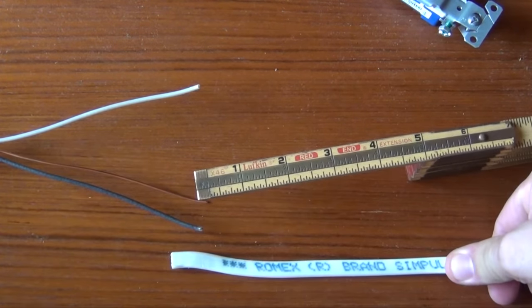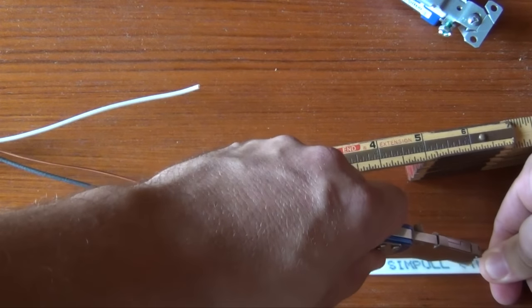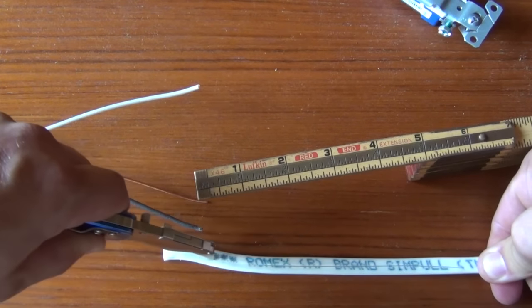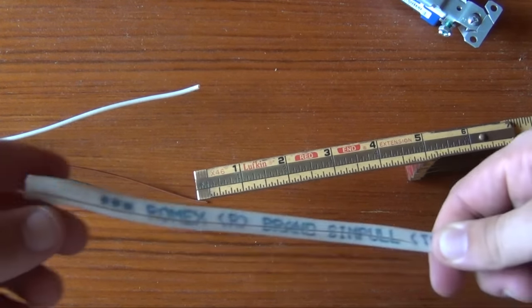Repeat the steps you took earlier by stripping off the sheathing, pulling it back, and chopping it off. Remember to leave six inches or more of your wire exposed.